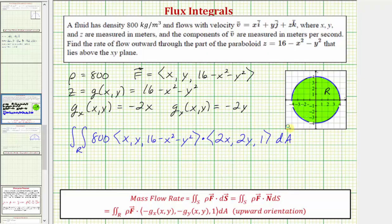Let's find the dot product and factor out the 800. We have 800 times the double integral over the region R of 2x squared plus 2y squared plus 16 minus x squared minus y squared, differential A.